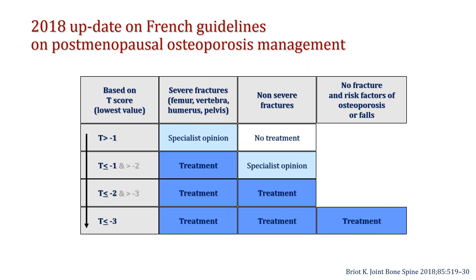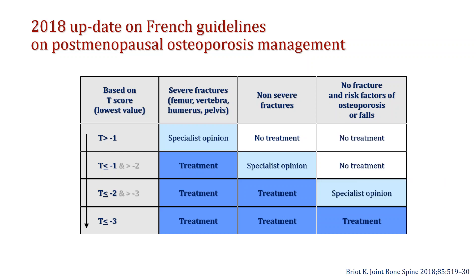For a severe fracture, if BMD is below -1 you should treat; if above, specialist advice is needed. For a non-severe fracture, the threshold is -2: treat if below -2, specialist if in the grey zone. If there is no previous fracture, the threshold is -3. We clearly define three situations: those who require treatment, those who do not, and the grey zone where FRAX, TBS, and other tools may help make a decision.